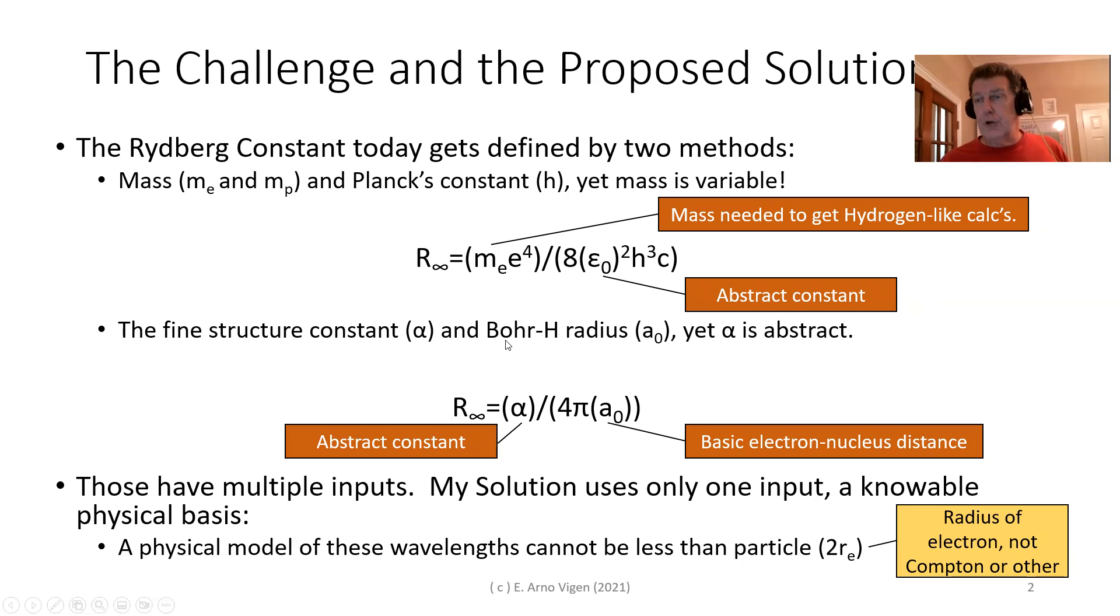It also uses the fine structure constant and the Bohr radius. Again, gets to the same number, but it uses alpha, which I will explain later if this effort has a physical meaning, then 4π, well that's a round circle, 2π times the radius of the distance between the electron and the proton in a basic hydrogen atom, a sub 0. Those have multiple inputs, and those are important because as you move them, then you can determine other elements.